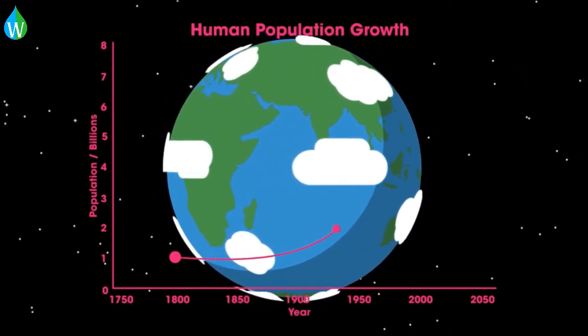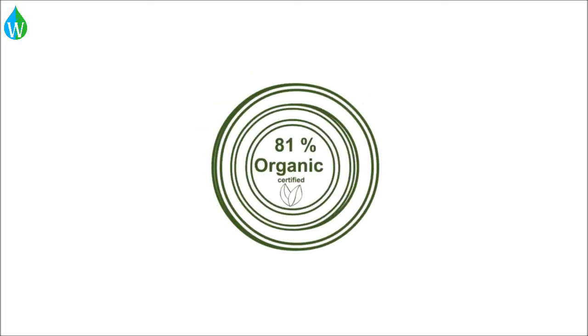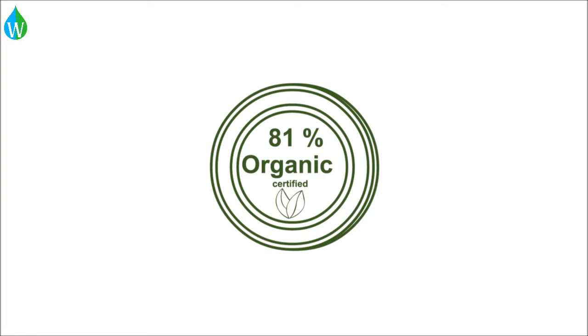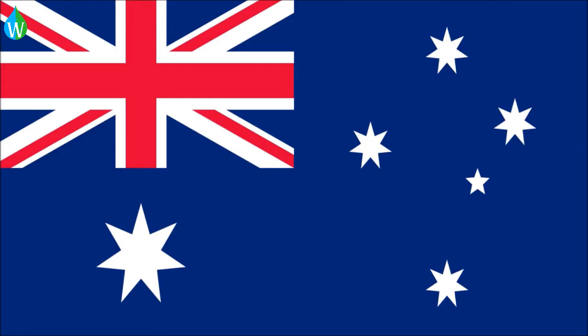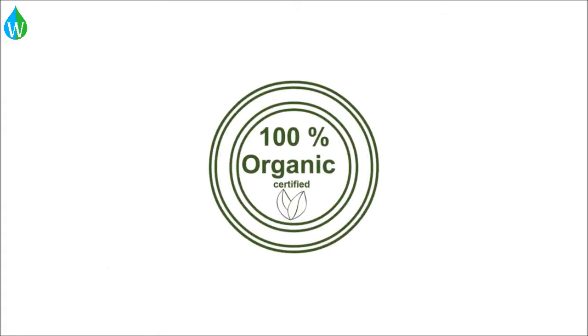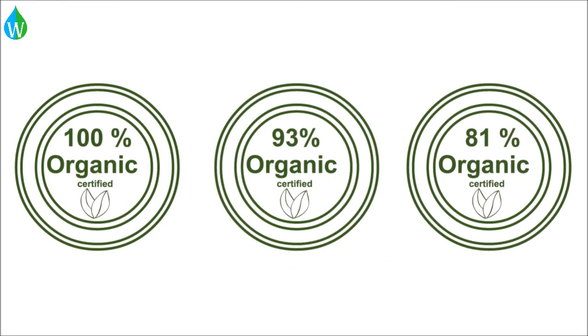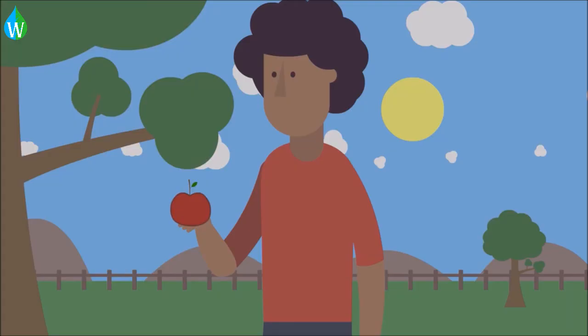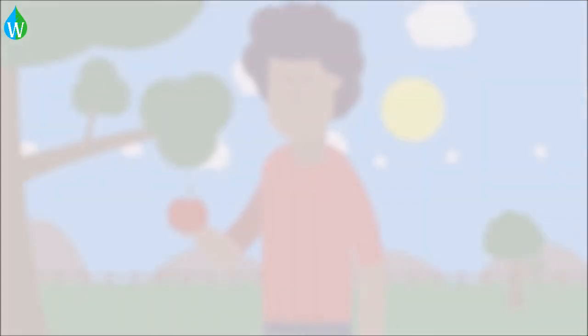One final thing to note is that every country has its own set of rules for what organic farming means. Europe, North America and Australia have quite strict and clear rules, but organic in one country could allow more chemicals than are allowed even in conventional farming in other countries. So don't necessarily be fooled by that organic label.